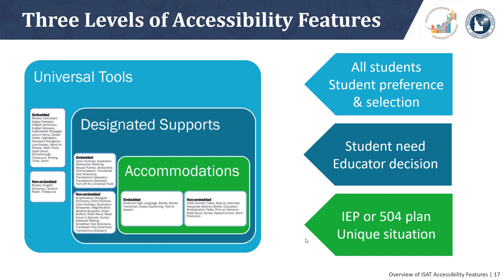For example, consider a student who has not needed an accommodation in the past who breaks an arm — this student might use a scribe if the need is appropriately documented. It is up to the district or charter school to determine what that appropriate documentation might be. These three levels of accessibility features are nested in the graphic because they are additive. Students with disabilities may use designated supports and universal tools in addition to any accommodations listed on their IEP or 504 plan. Universal tools, designated supports, and accommodations will be covered in more detail in the other three episodes of the Training Series.